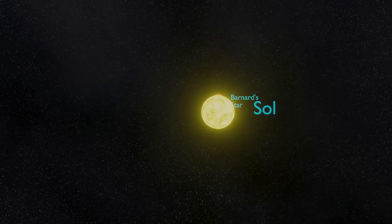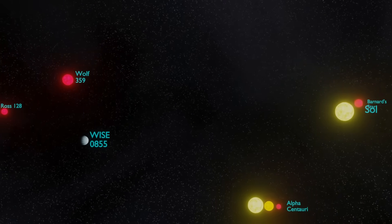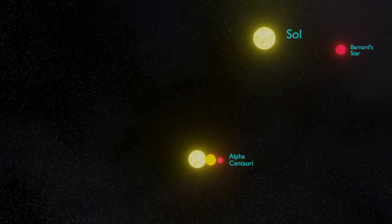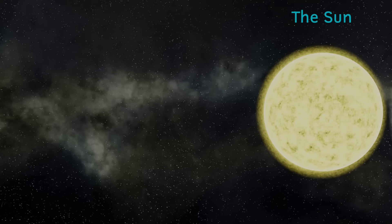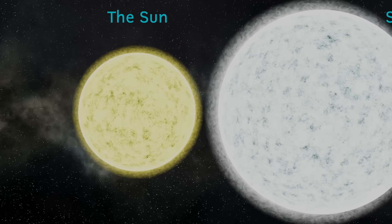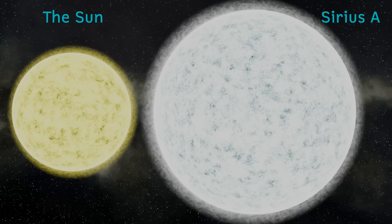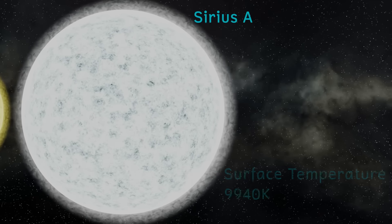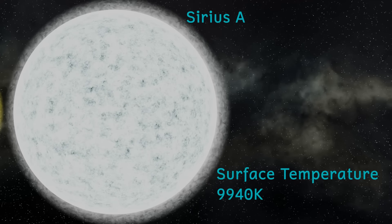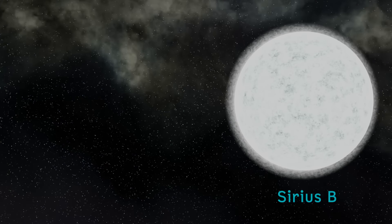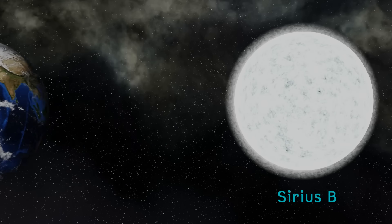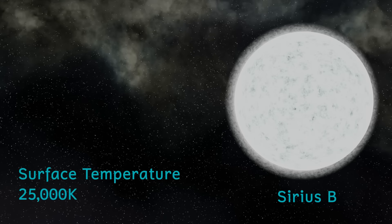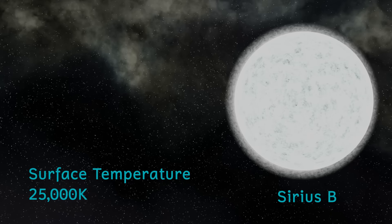Moving up nearly another order of magnitude, we travel 8.6 light years to Sirius — the brightest star in the night sky. It's actually two stars; Sirius A is a bluish-white star much larger than our sun and about 25 times more luminous, with a surface temperature of 9940 Kelvin. The other star, Sirius B, is a white dwarf — actually a little smaller than the Earth with only about 5% of the luminosity of our sun. However, its surface temperature is 25,000 Kelvin — more than four times hotter than the surface of our sun.